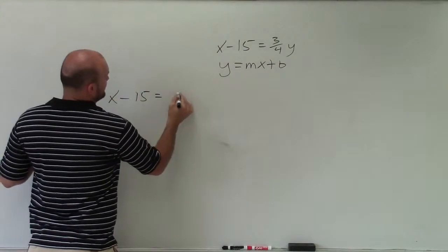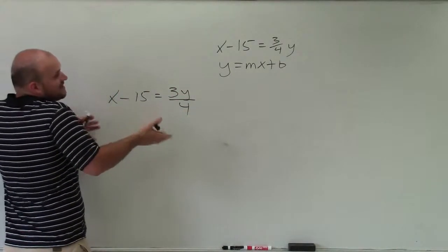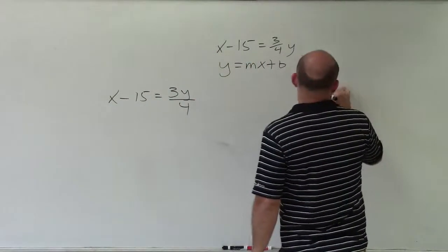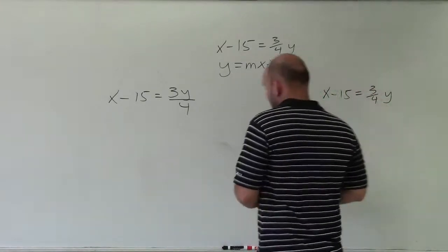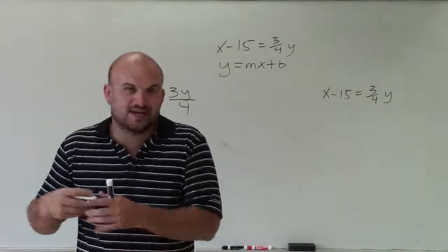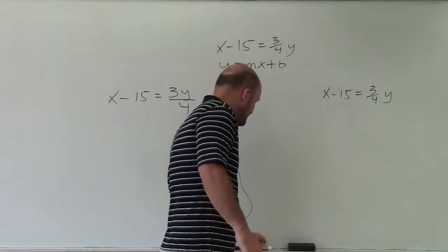One is writing it like this, which is the same thing. Three-fourths times y is the same thing as 3y over 4, and then just write it, keeping the same way, but then write it different ways. So there's two different ways, and this kind of goes back to solving equations or solving literal equations on how to solve when we have a fraction.